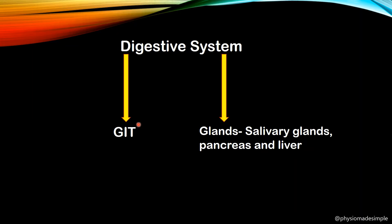So the GIT starts in the oral cavity and ends in the anus. The associated glands — the pancreas and liver — together with the GIT form the complete digestive system. These glands aid in secretion and digestion.